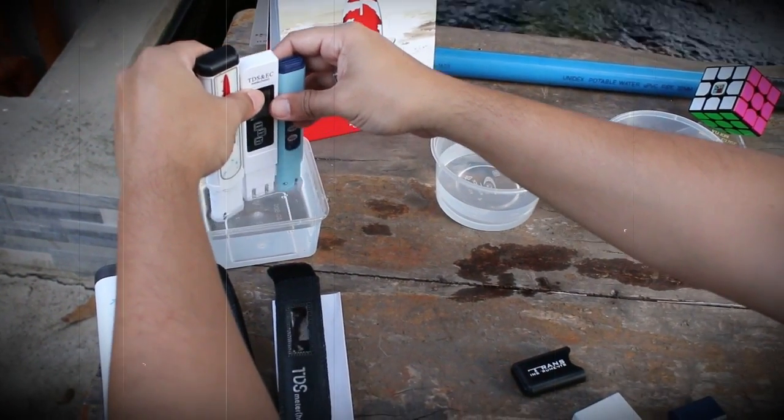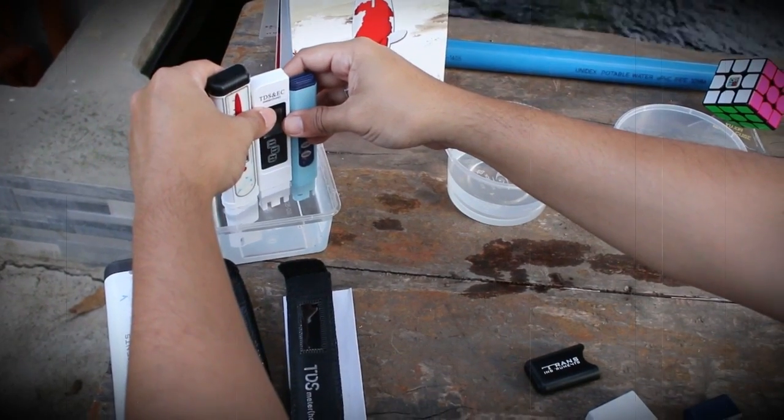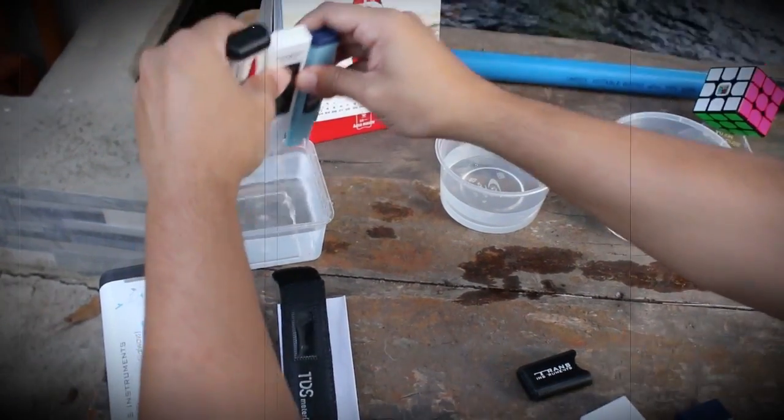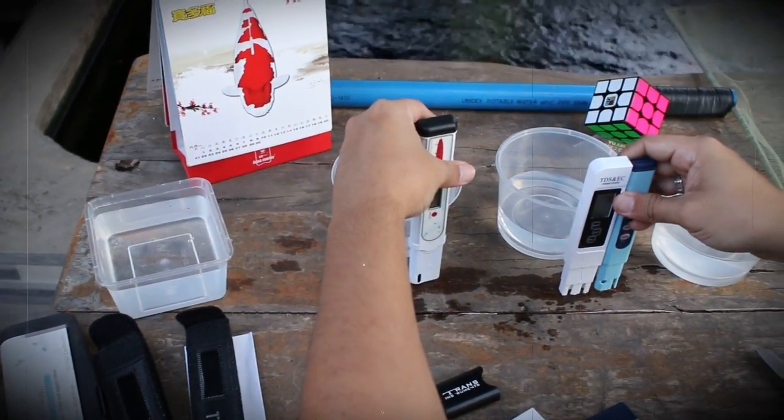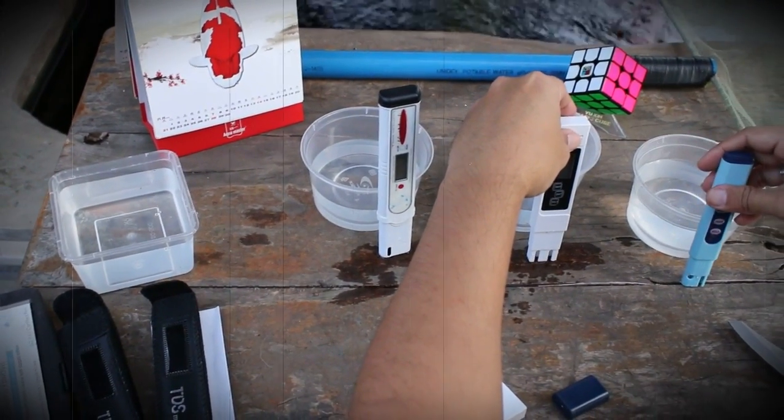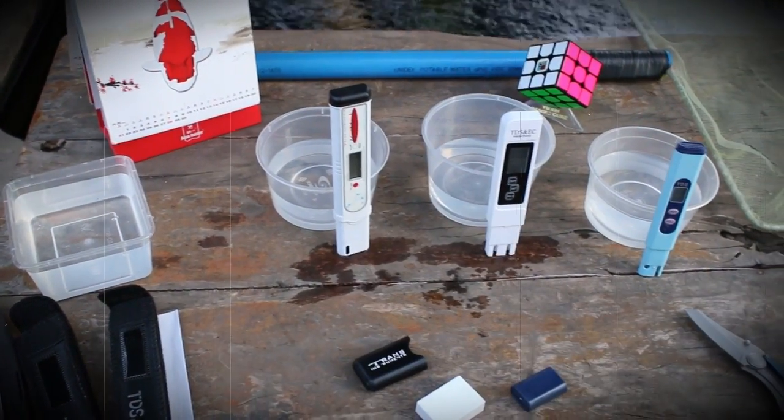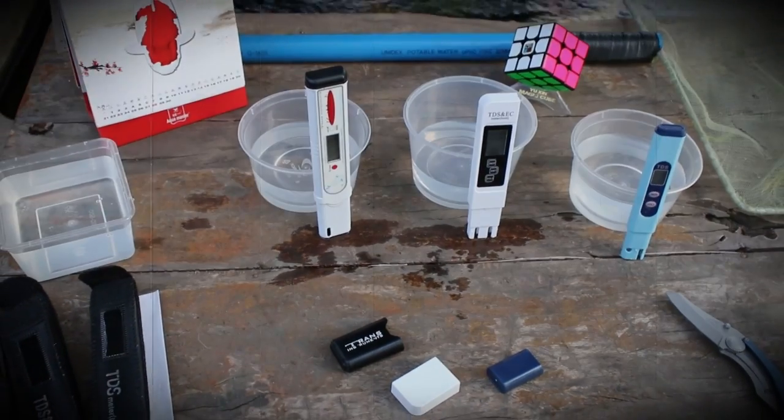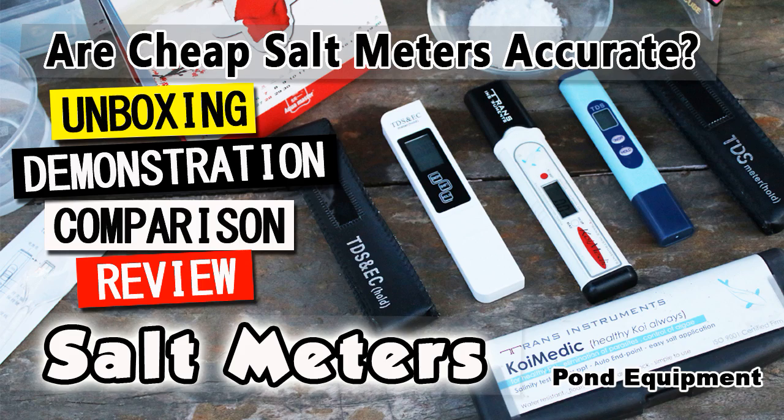So together we found out that these cheaper salt meters do not give accurate measures of water salinity. I do not recommend this type of salt meters to be used on your koi ponds. But I will not stop you from buying it though. Well, that's it for now guys. See you on the next video. Yeeha!